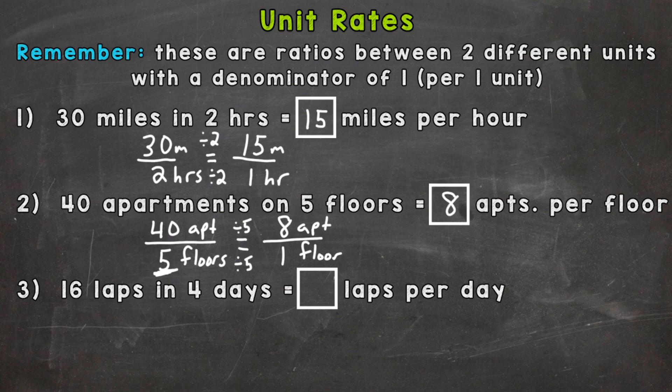We'll read this from left to right: 40 apartments on 5 floors equals 8 apartments per 1 floor or per floor. And lastly, 16 laps in 4 days. So we need to find out how many laps per 1 day. Set it up as a fraction.